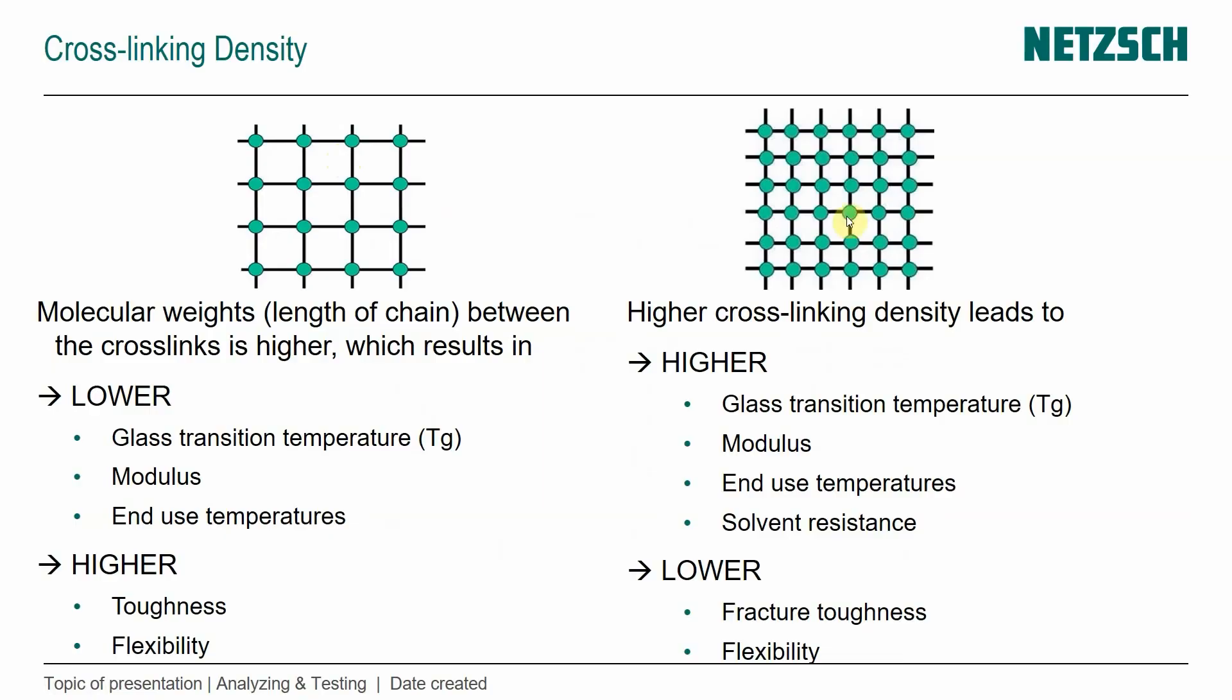But on the right, you see a higher cross-linking density, and that leads, in comparison to the left, to a higher glass transition temperature, to higher modulus, to higher end-use temperatures, and increasing solvent resistance. The more covalent bonds, and the closer they are, the more you're resistant to chemicals in general, and solvents in particular. But the downside is the fracture toughness and flexibility is lower.